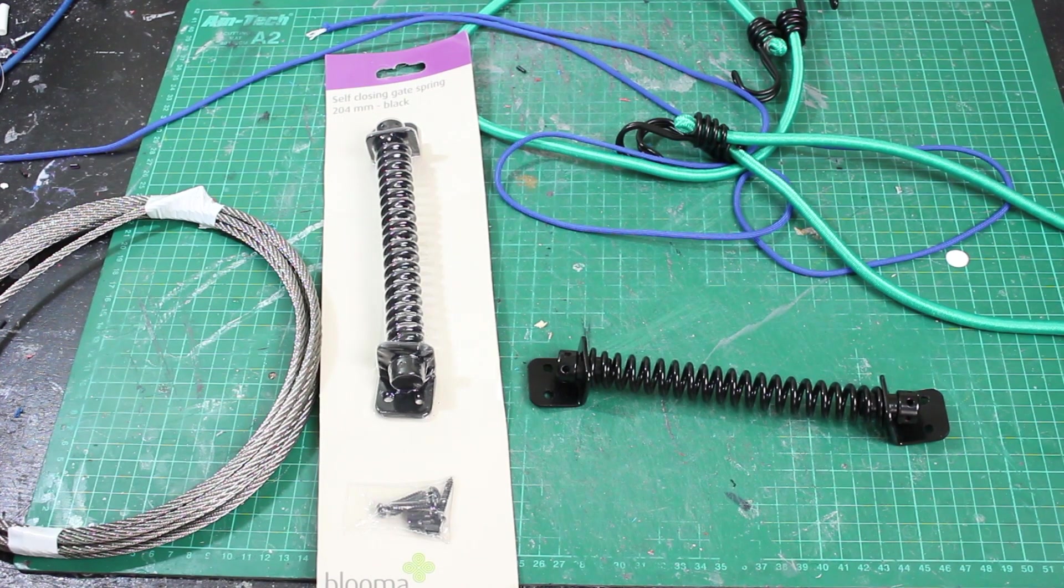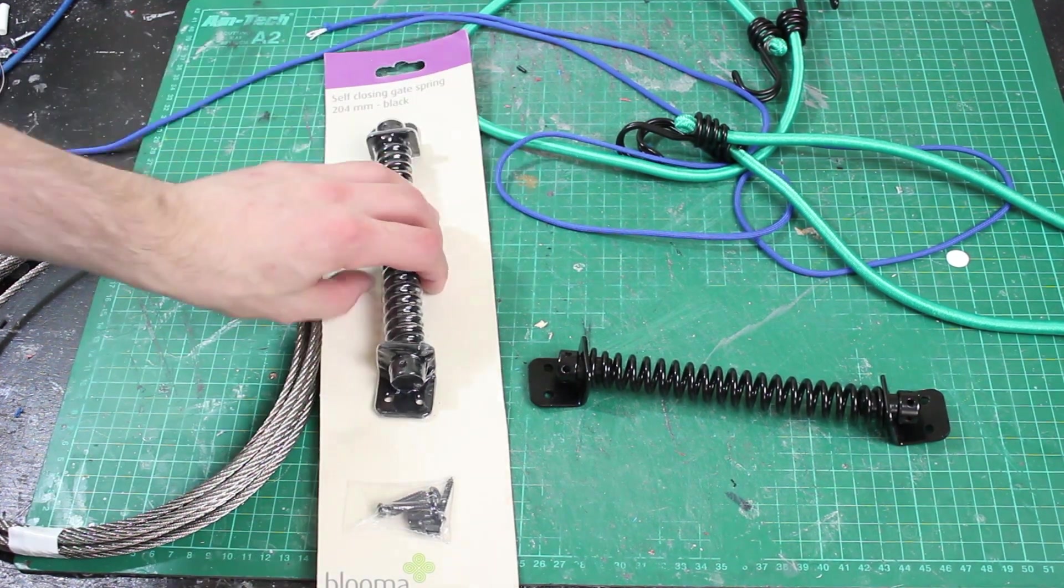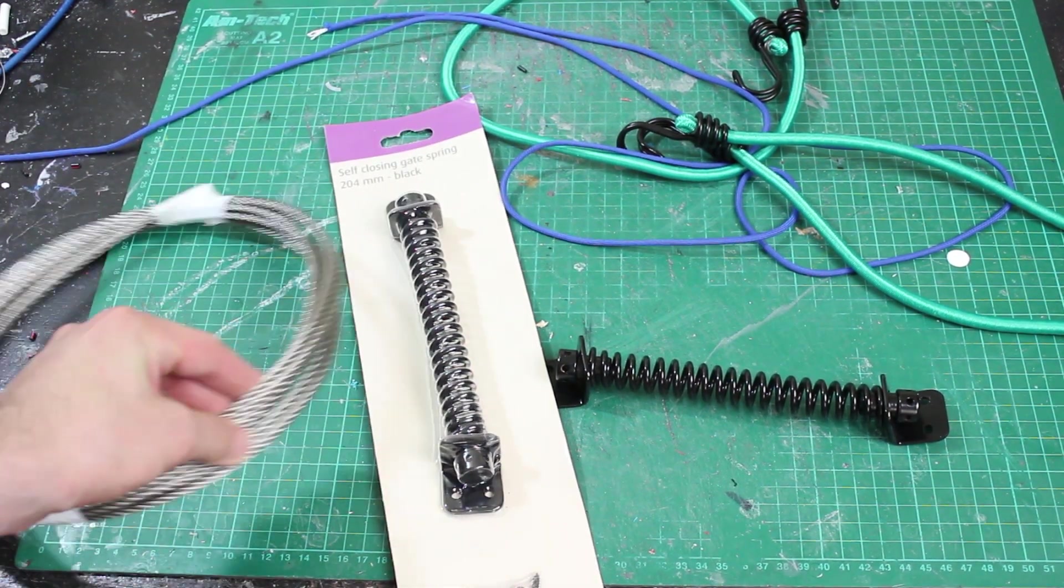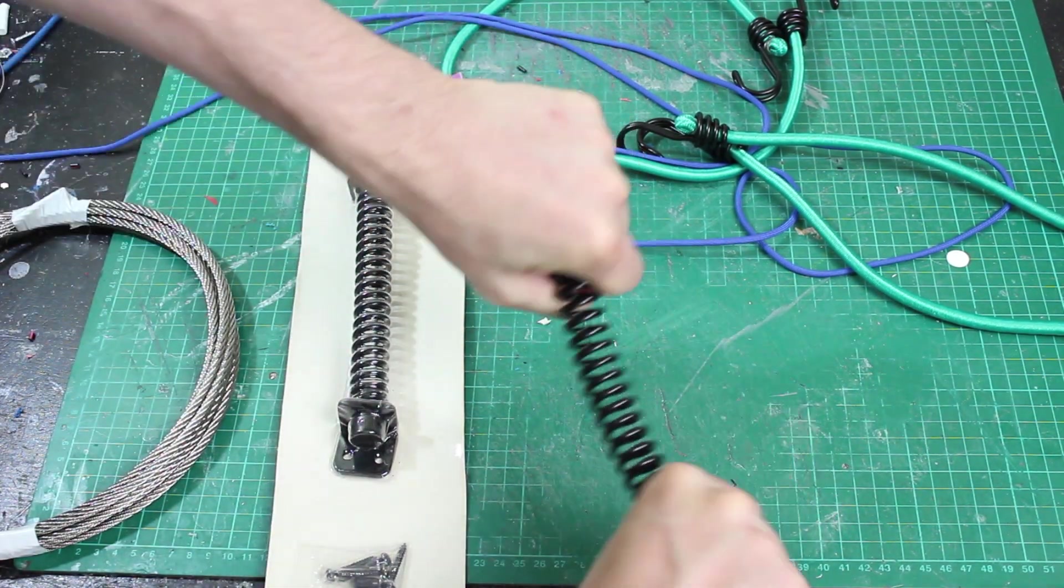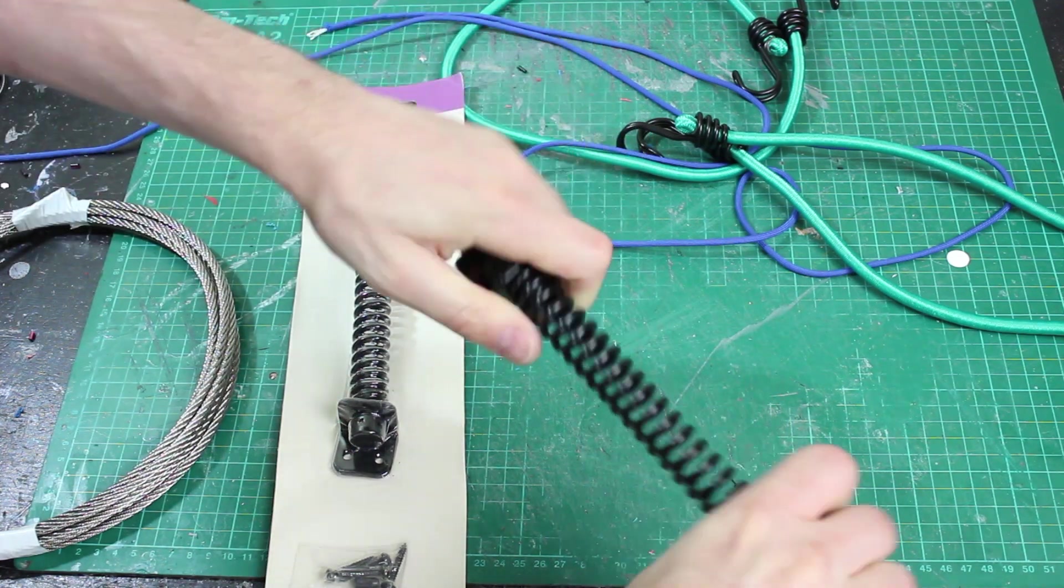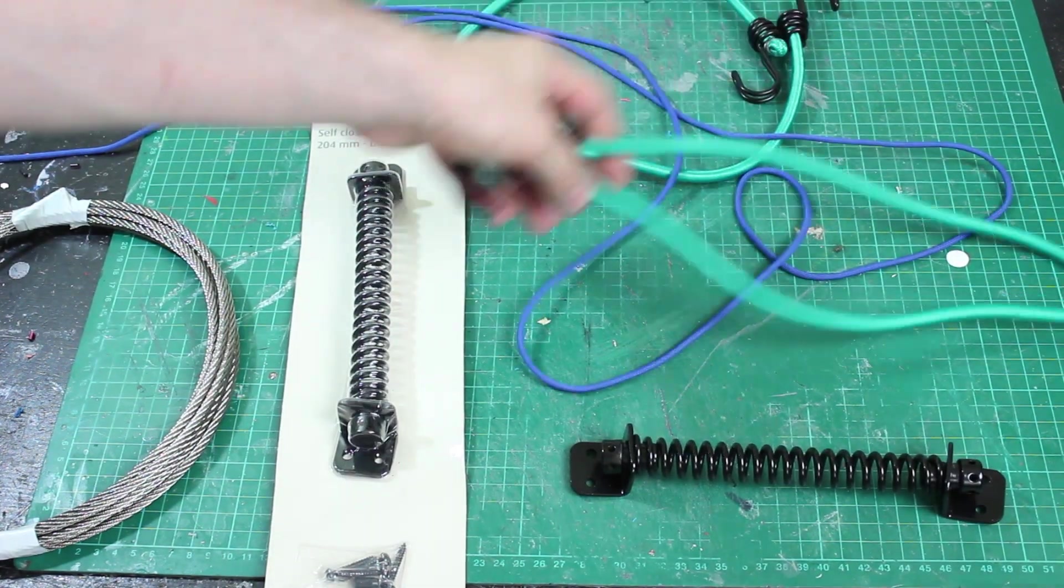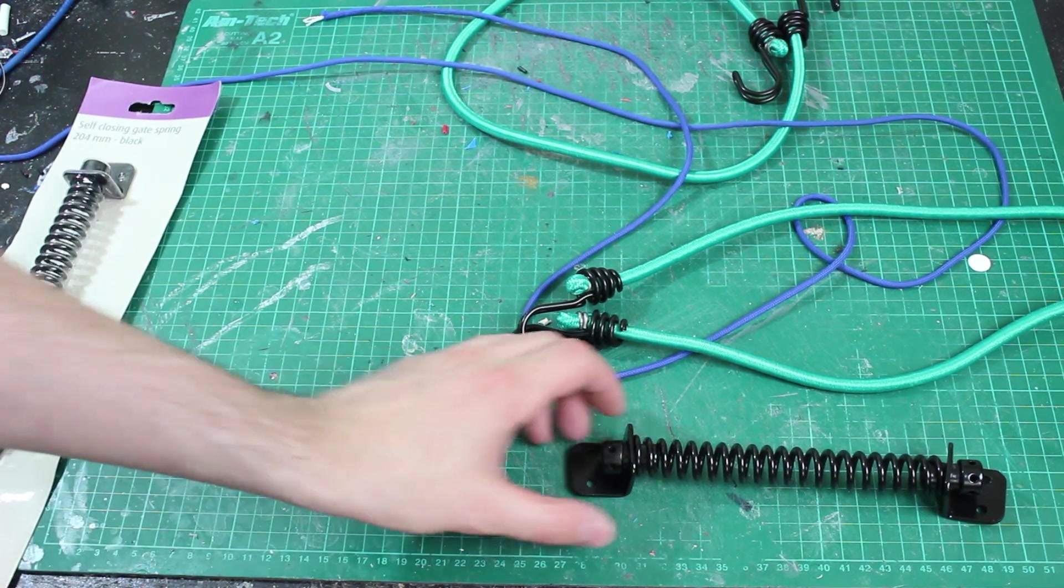So at the end of the last episode, I said I needed to go shopping to get some springs. Basically I found various things. I've got some steel cable and I found these gate springs, which are really stiff. They're meant to twist or do this sort of thing, but you can stretch them a little bit.